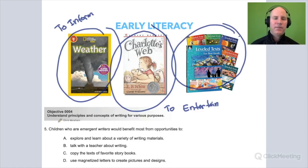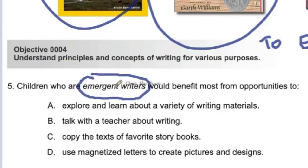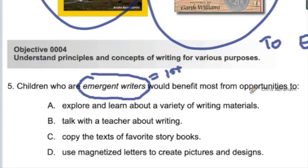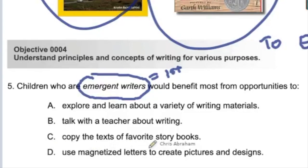All right, let's read over number five. It says: children who are emergent writers — that means just starting out, so first grade — would benefit most from opportunities to: A, explore and learn about a variety of writing materials; B, talk with a teacher about writing; C, copy the text of favorite storybooks; D, use magnetized letters to create pictures and designs.